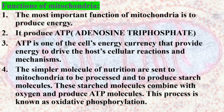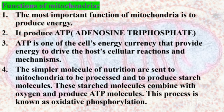Functions of Mitochondria: The most important function of mitochondria is to produce energy for the cell. It produces ATP, that is adenosine triphosphate. ATP is one of the cell's energy currencies that provides energy to drive the host's cellular reactions and mechanisms. Simpler molecules of nutrition are sent to mitochondria to be processed and produce charged molecules, which combine with oxygen to produce ATP molecules. This process is known as oxidative phosphorylation.